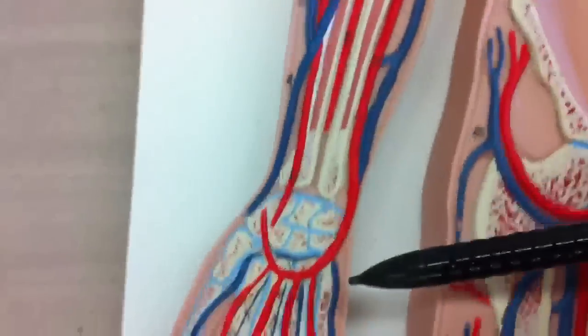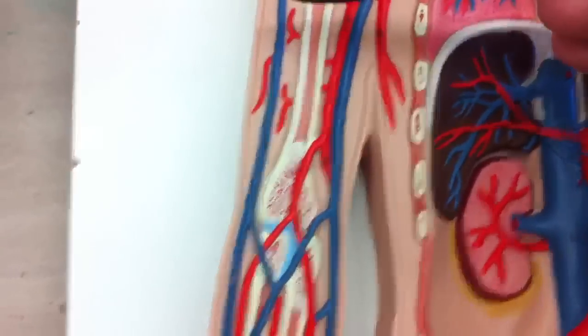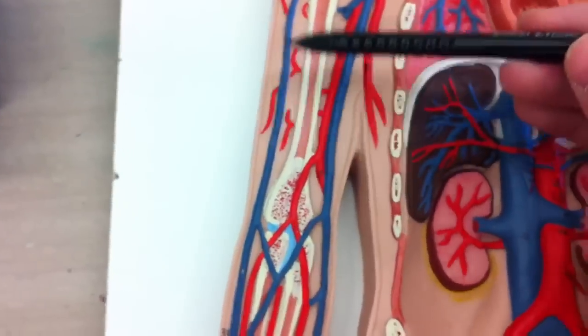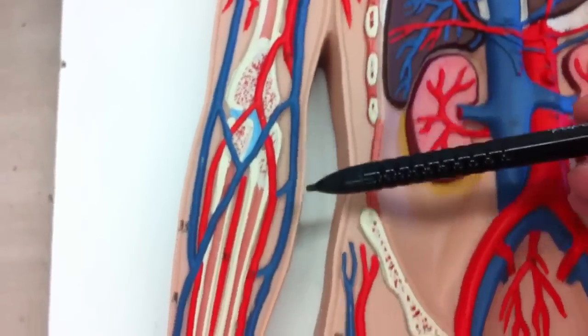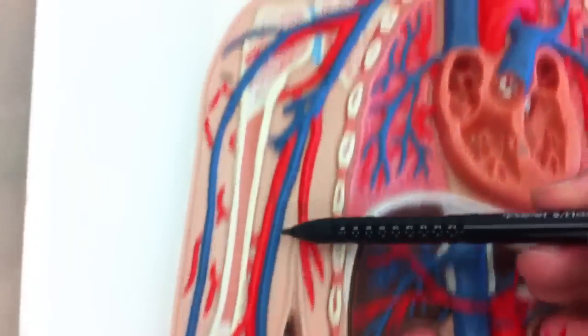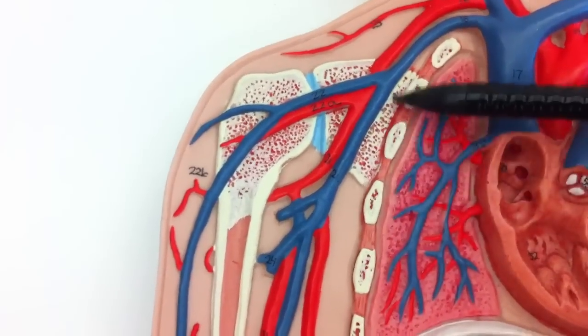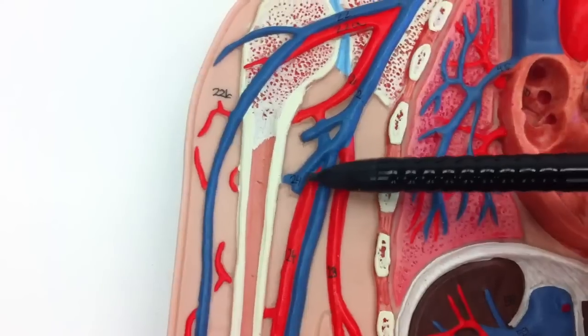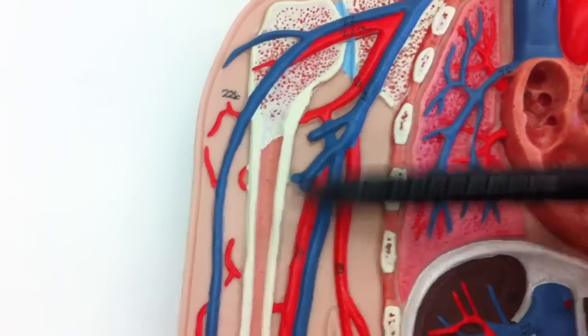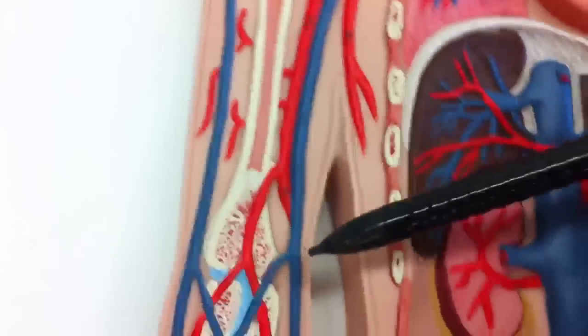And then over to the arms we have the cephalic vein, which is on the outside here, and then the basilic, which will be on the inside. Then they'll join over to here. So this will be the axillary, this will be the brachial vein, and again cephalic and basilic.